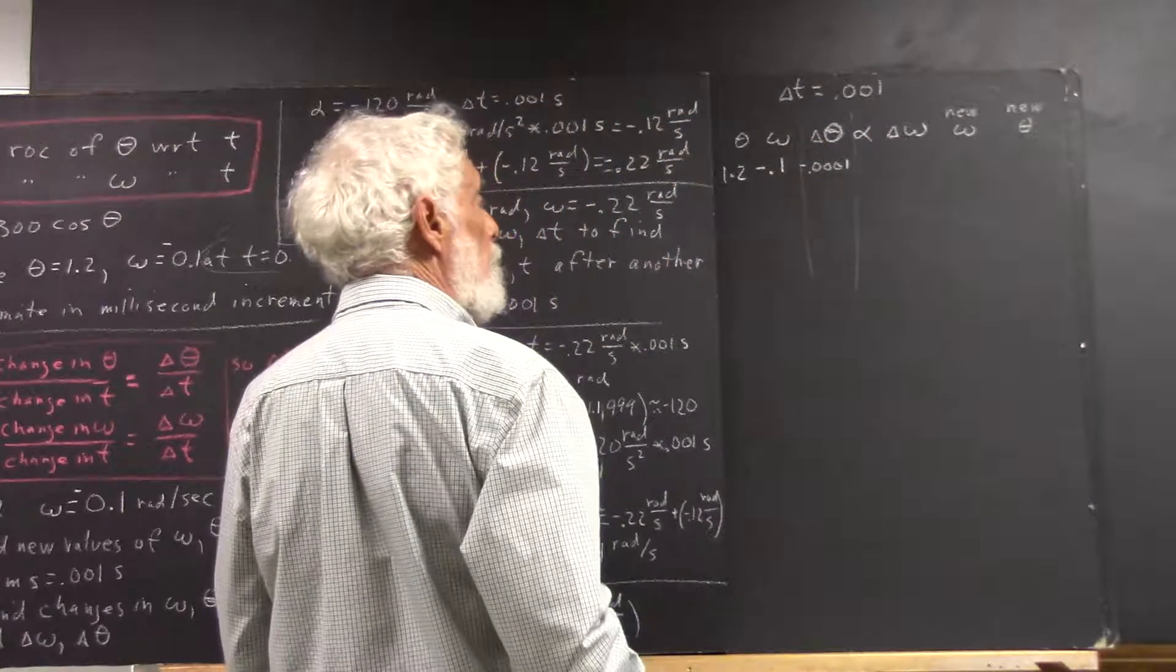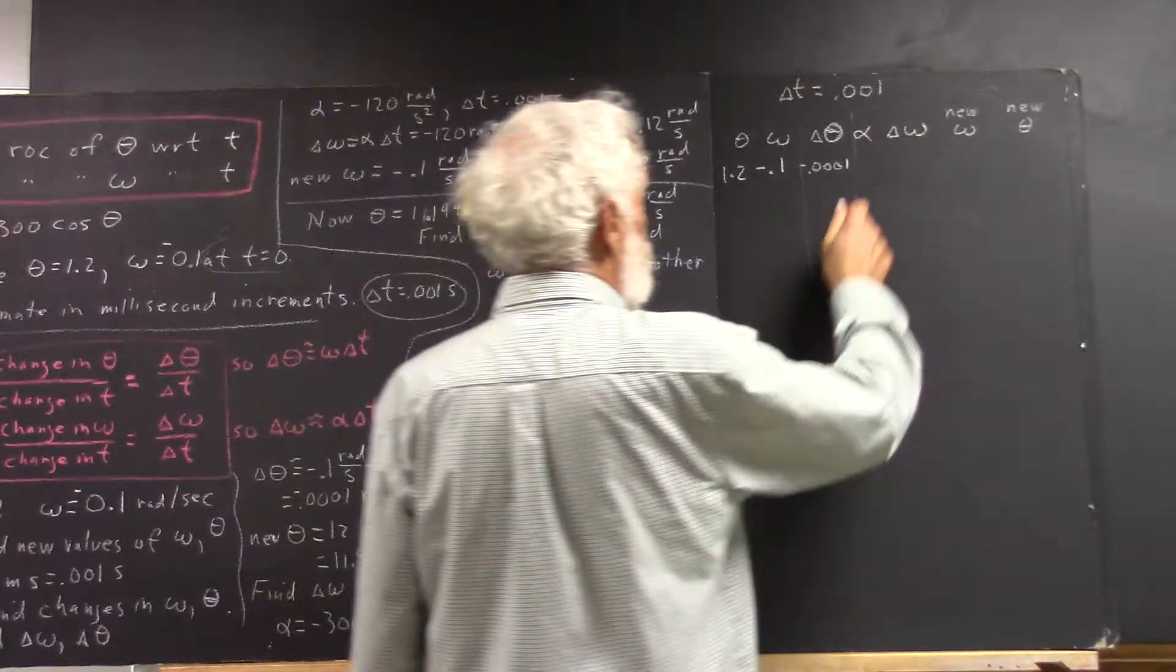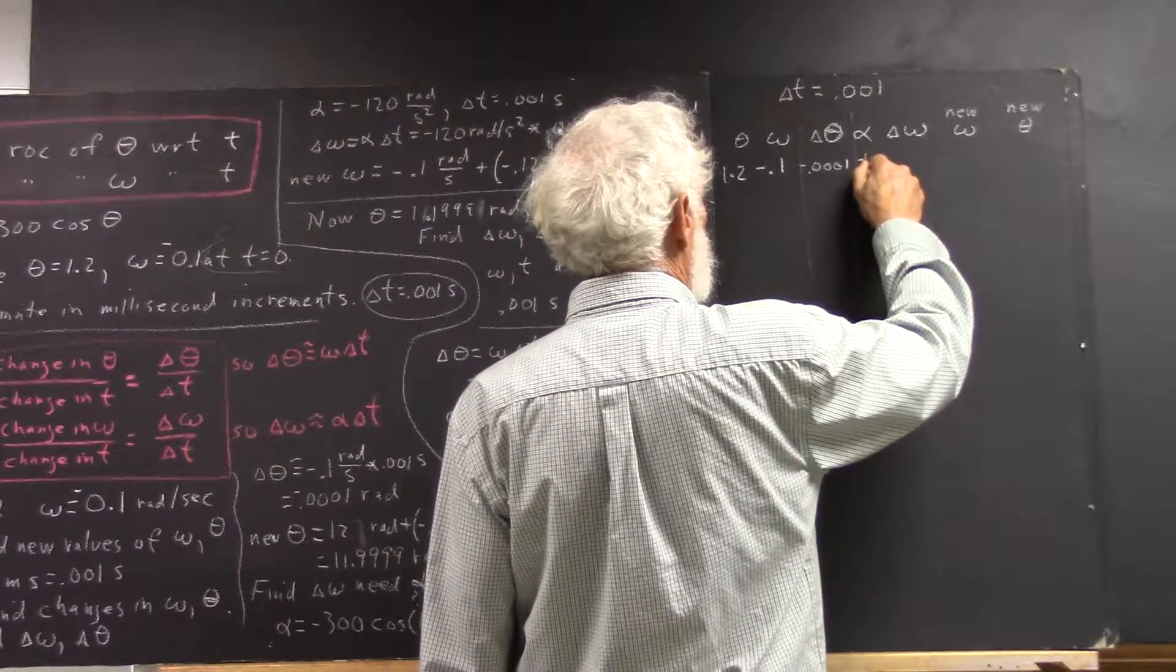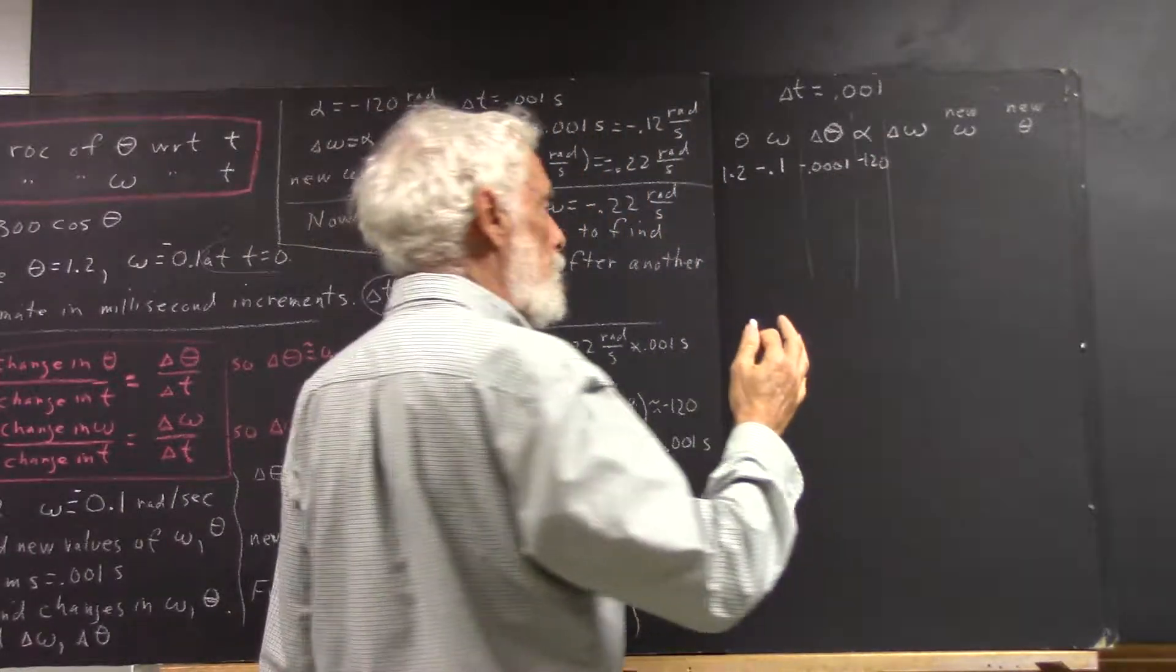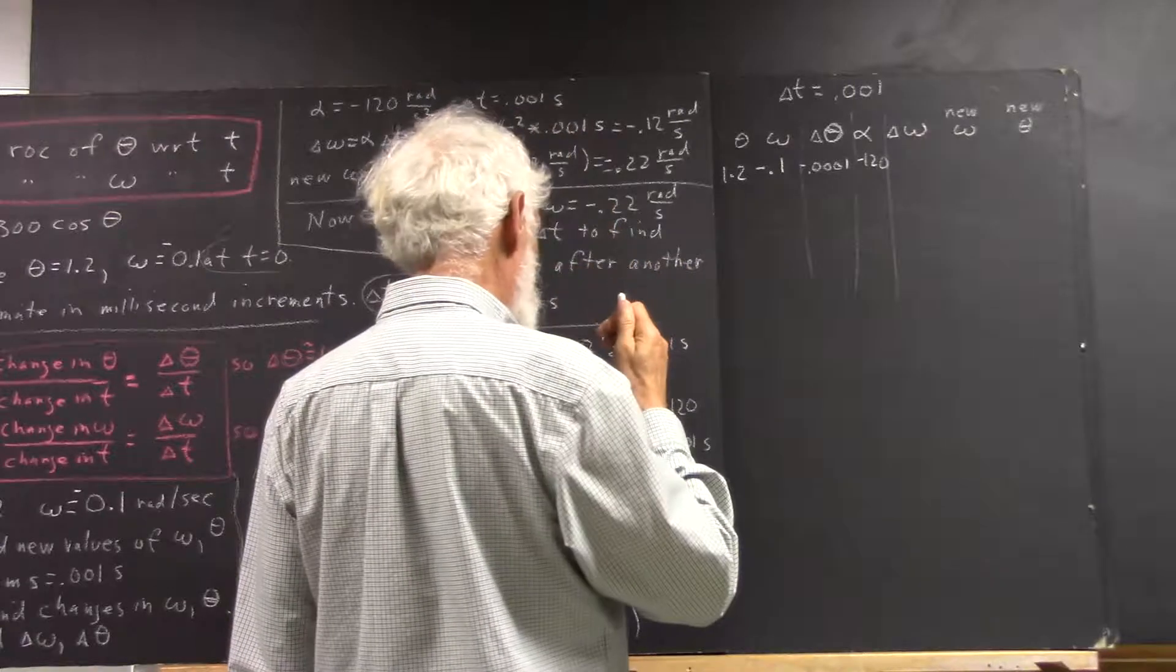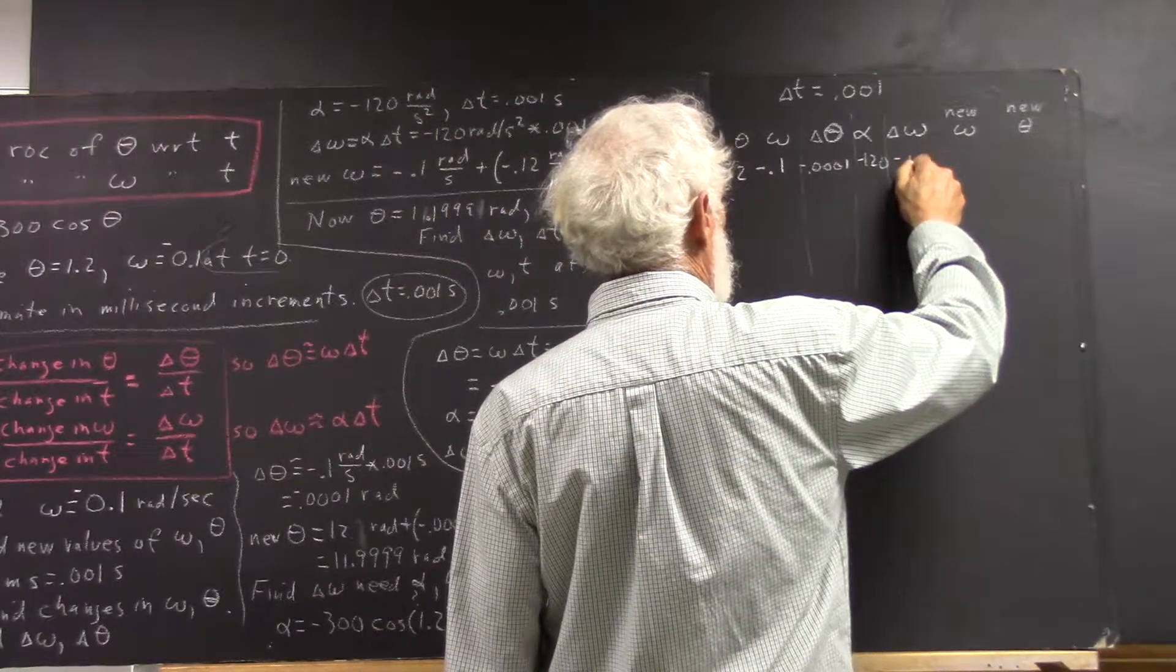Alpha was approximately negative 120, and delta omega then was approximately negative 0.12.